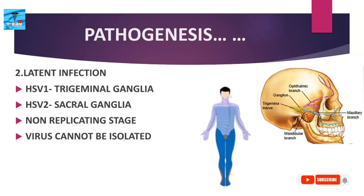In latent infection, HSV has a tendency to undergo latency in neurons. HSV1 undergoes latency in the trigeminal ganglia and HSV2 in the sacral ganglia. This is a non-replicative state — HSV does not replicate during latency, except for a small RNA called microRNA, encoded by the latency-associated viral gene, which maintains the latent infection and prevents cell death. In this latent state, the virus cannot be isolated.